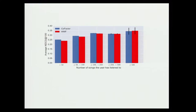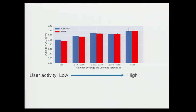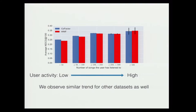To further demonstrate when co-factor does better or worse, here is a breakdown of NDCG on one dataset according to user activity. The x-axis is sorted by user activity from low to high, with blue bars for co-factor and red bars for weighted matrix factorization. The co-factor model helps more when user activity is very low, which makes sense because traditional collaborative filtering always struggles with limited data, while co-factor can make use of additional signal from item co-occurrence. We observe similar patterns across other datasets.